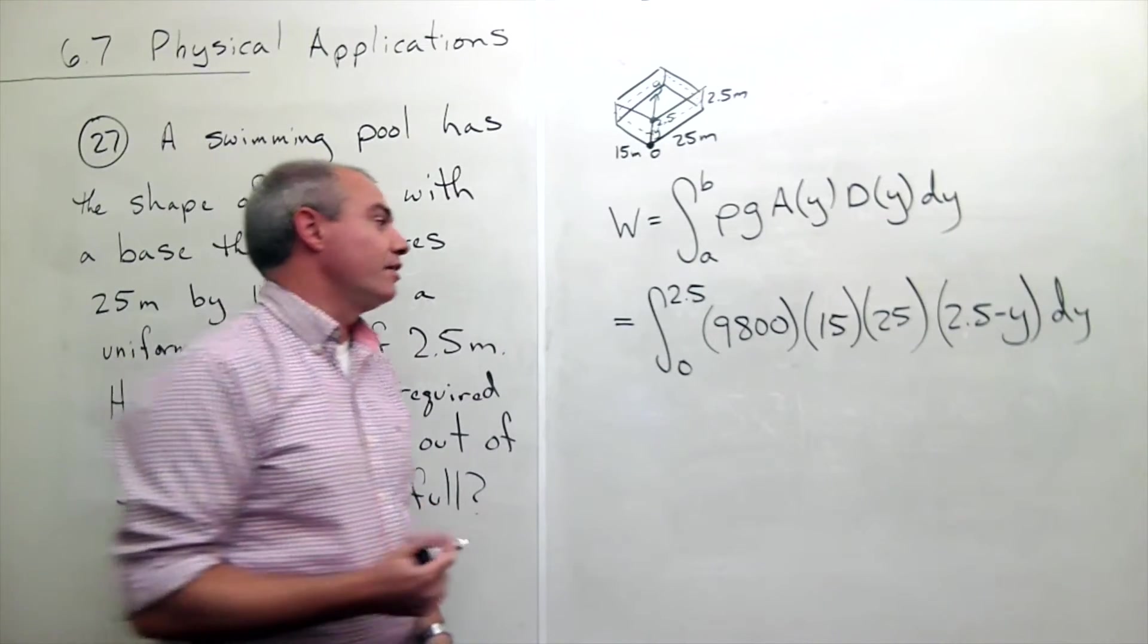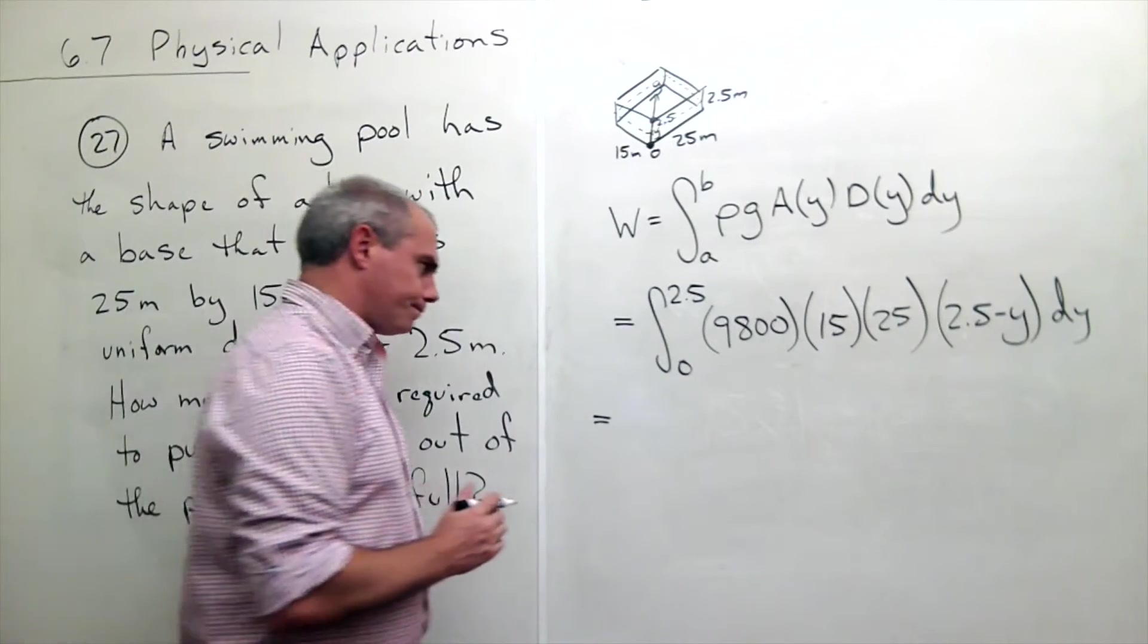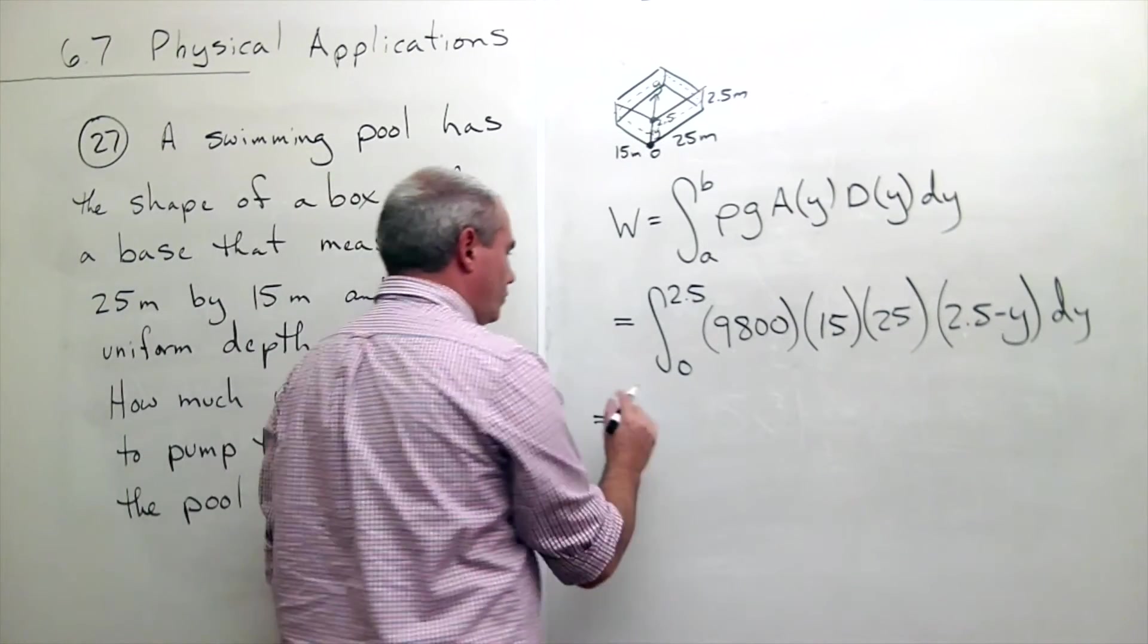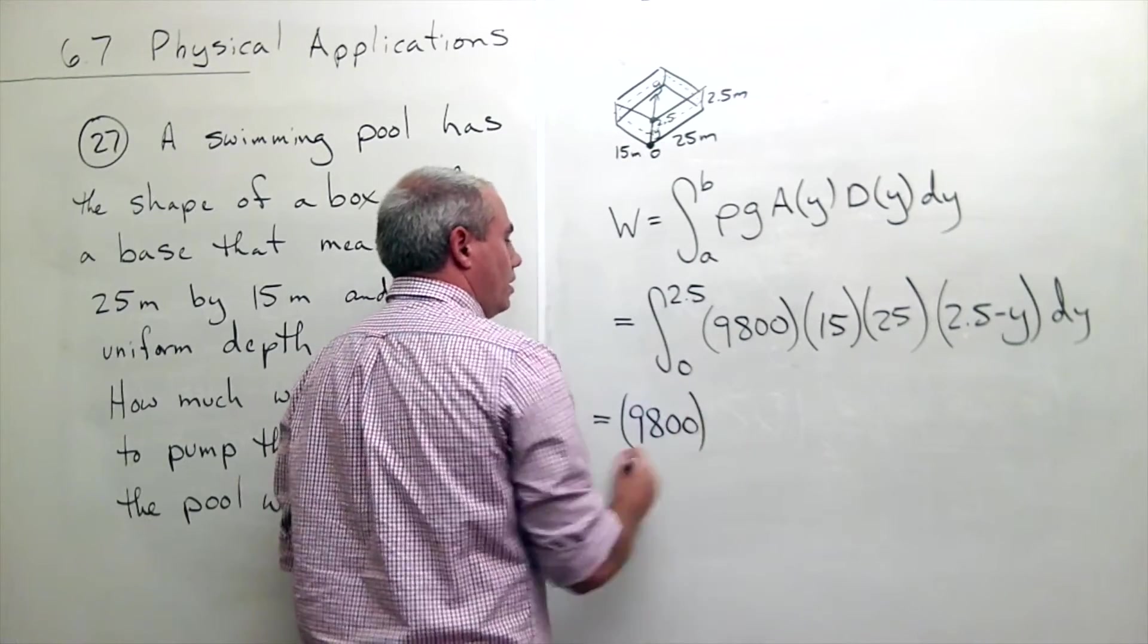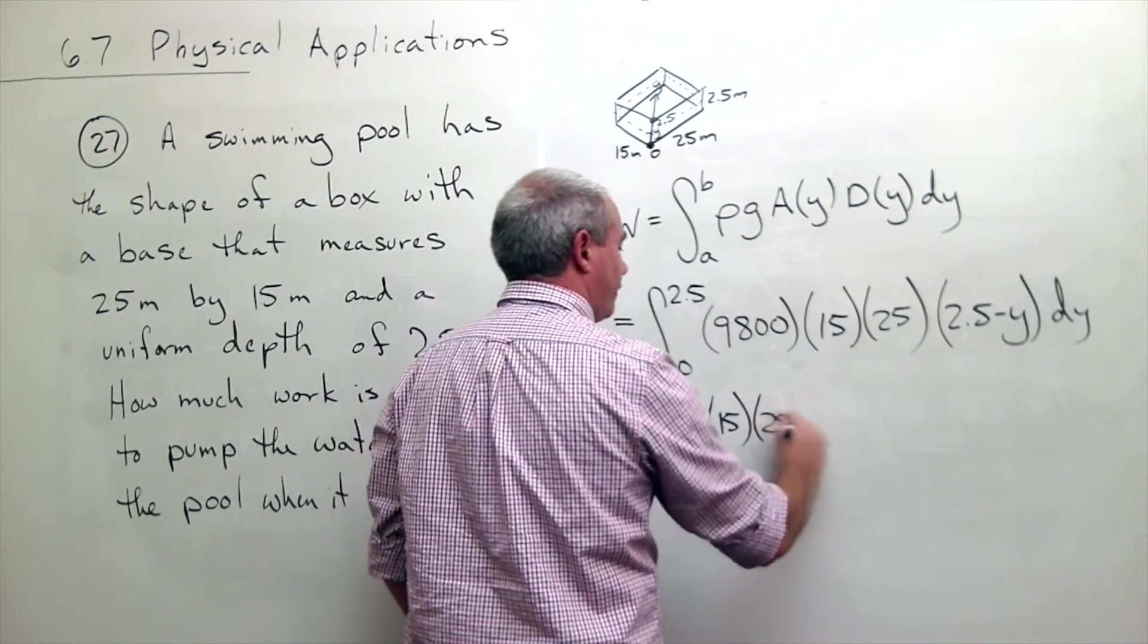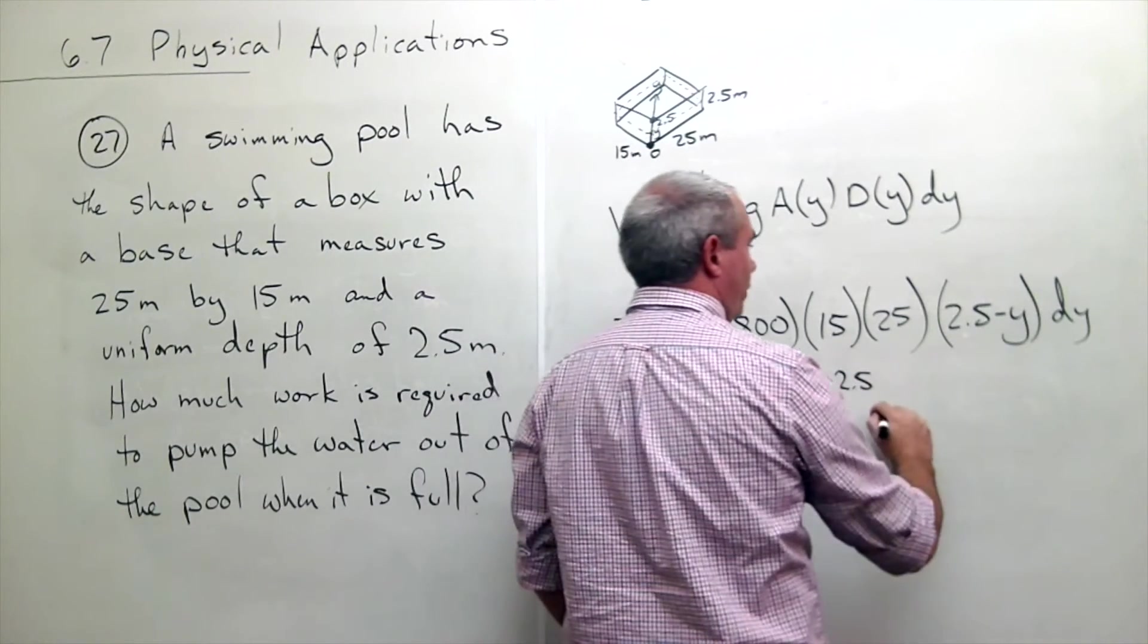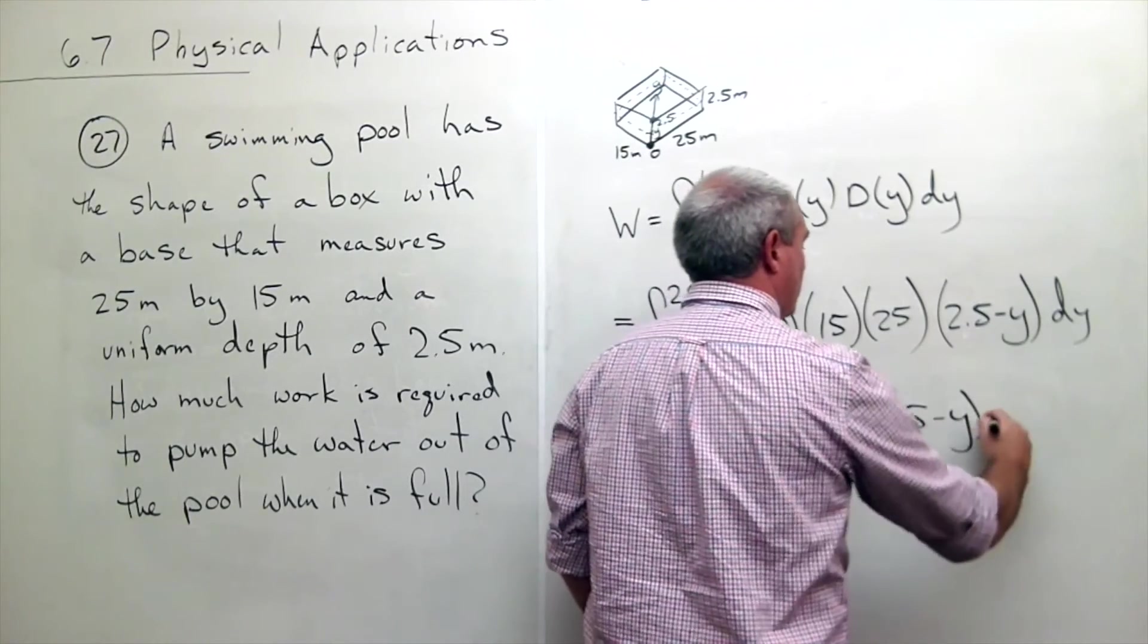Okay, so now let's move some things around and actually integrate this. So first of all, 9,800, 15, and 25, those are all constants. So I could pull them out of the integral, and I get 9,800 times 15 times 25 times the integral from 0 to 2.5 of 2.5 minus y dy.